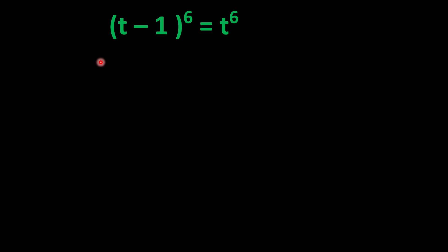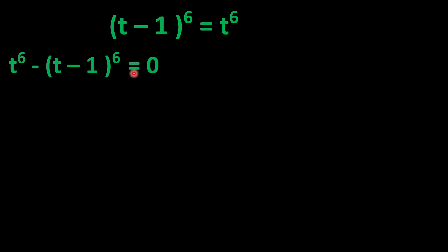We have the equation (t-1)^6 = t^6 and we have to solve this for the value of t. First, we send (t-1)^6 to the other side of the equation, so it becomes t^6 - (t-1)^6 = 0.